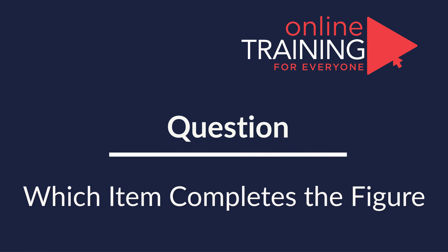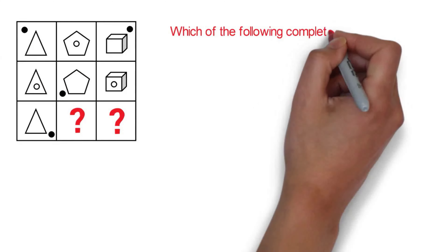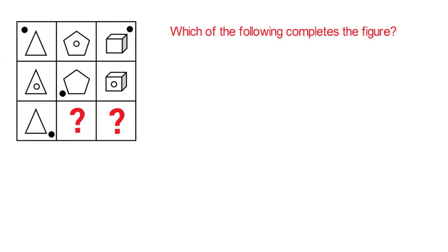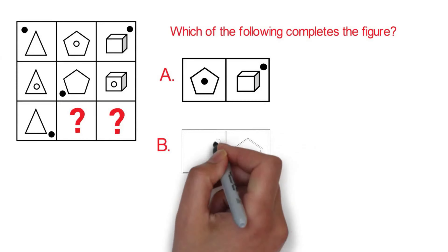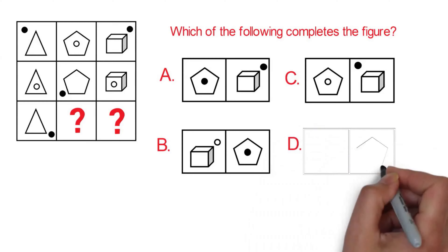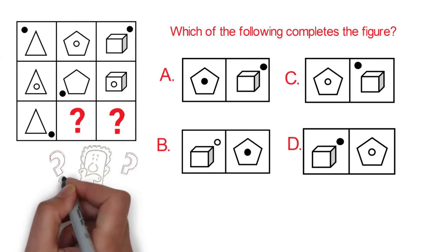You're presented with a three-by-three matrix containing different shapes — in our case triangles, pentagons, and cubes. You have two spaces that are missing a shape, and you need to select from four possible choices: A, B, C, and D. Do you see the solution?